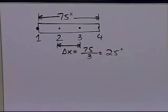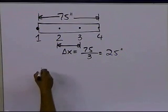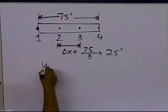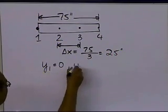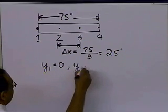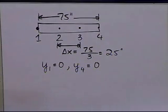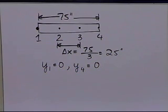So that means I already know that the deflection at node 1 is 0, and I already know the deflection at node 4 is 0, because it's simply supported at those two nodes. So I need to find out what the deflection is at node 2 and node 3.